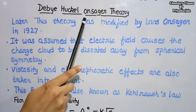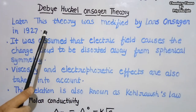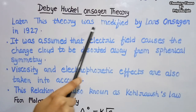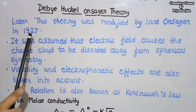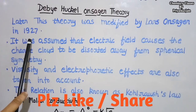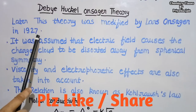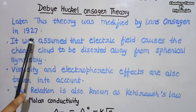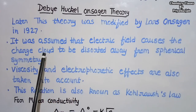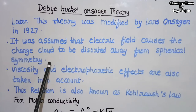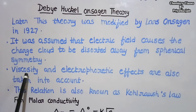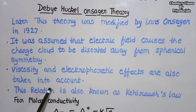Now we look at the Debye-Hückel-Onsager theory. After the Debye-Hückel theory, it was modified by Lars Onsager in 1927. All the assumptions of the Debye-Hückel theory are retained. Additionally, it is assumed that the electric field causes the charge cloud to be distorted away from spherical symmetry. Viscosity and electrophoretic effects are also taken into consideration. This relation is also known as Kohlrausch's law.